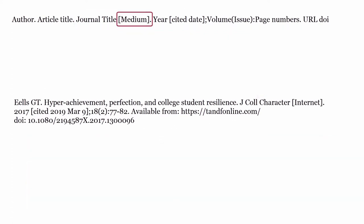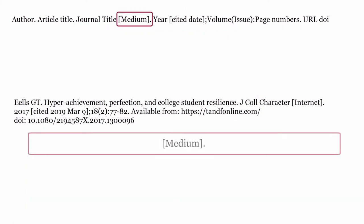Medium: for online articles, you need to include the medium. Use the word 'Internet' in square brackets, and end the medium with a full stop.